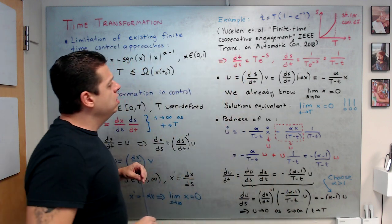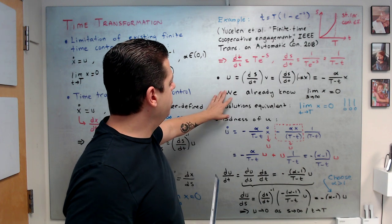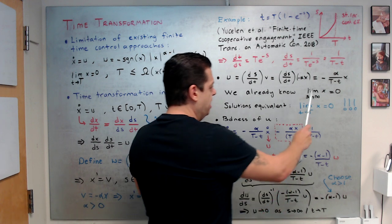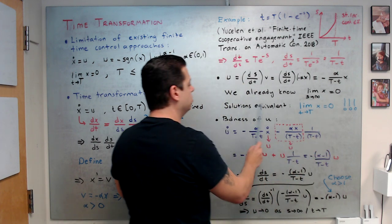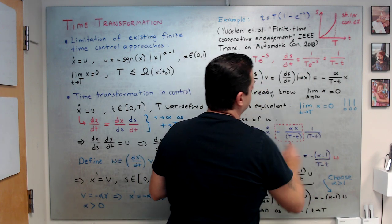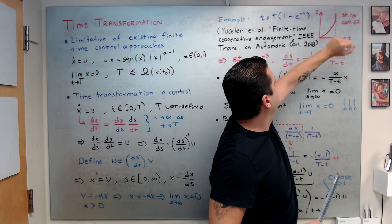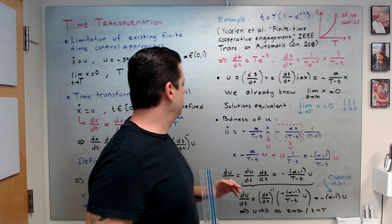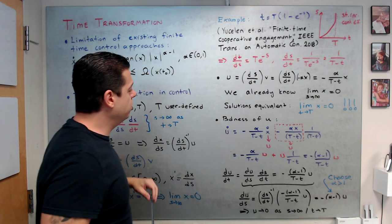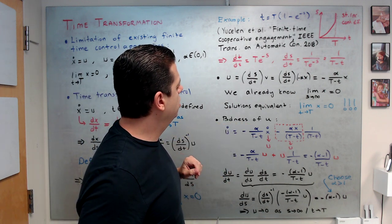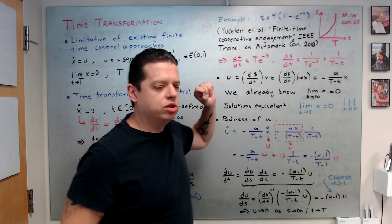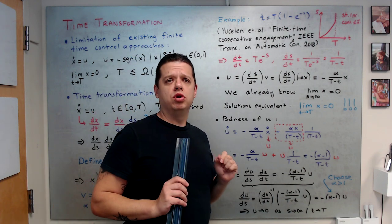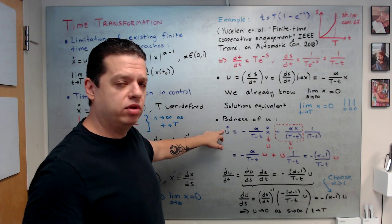Since we are looking at the same ODE on different time intervals, their solutions are equivalent. If x goes to zero as s goes to infinity, then — due to the strictly increasing continuously differentiable time transformation — x goes to zero as t approaches capital T. To establish boundedness of control signal u, I want to create an ODE for u so I can analyze it.